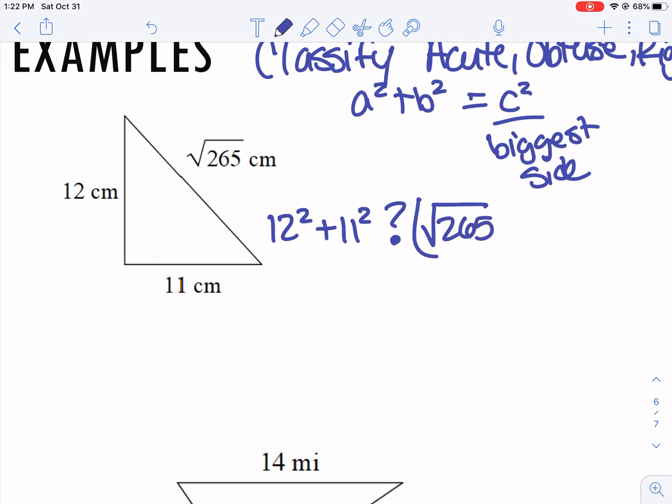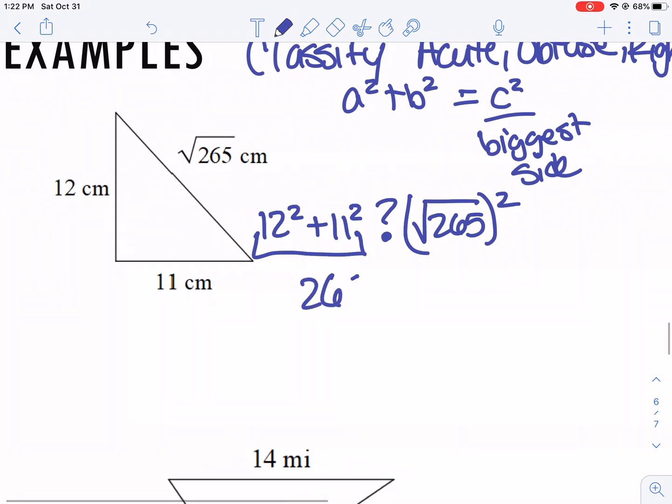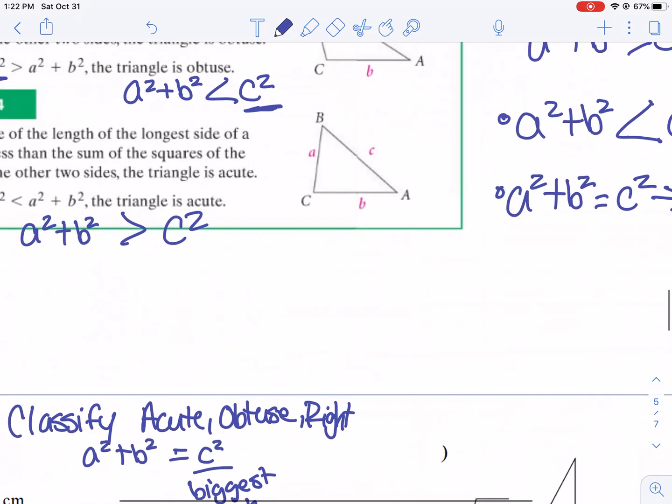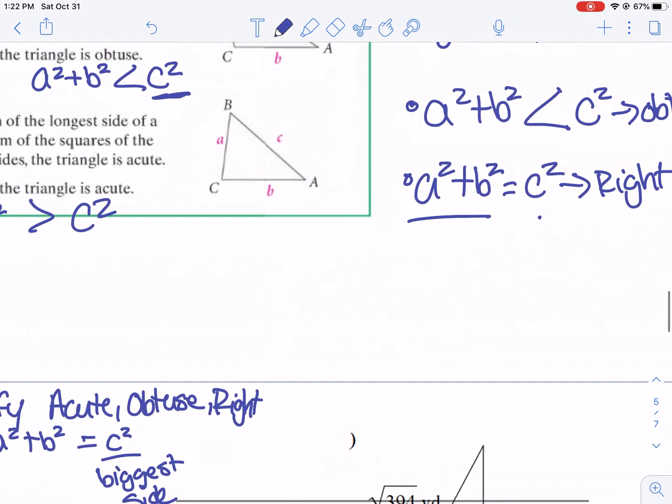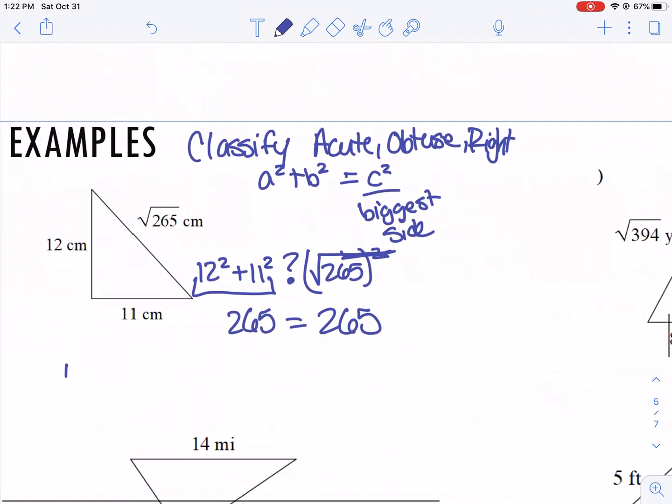And we're going to check to see how is it related to the square root of 265 squared. So type that into your calculator. 12 squared plus 11 squared is 265. And remember, when you square a radical, they kind of cancel out. So 265 equals 265. So if I go back to this list here, a squared plus b squared equaled c squared. So this makes it a right triangle.